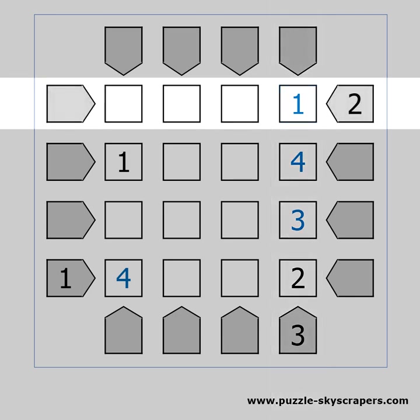Now let's check out the first row. We should have 2 visible skyscrapers from the right, and we have a 1 already next to the clue. Anything placed next to the 1 will also be visible. If we place anything other than 4 there, then 3 skyscrapers will be visible from the right. Therefore we should place the 4 next to the 1, to hide the 2 and the 3.